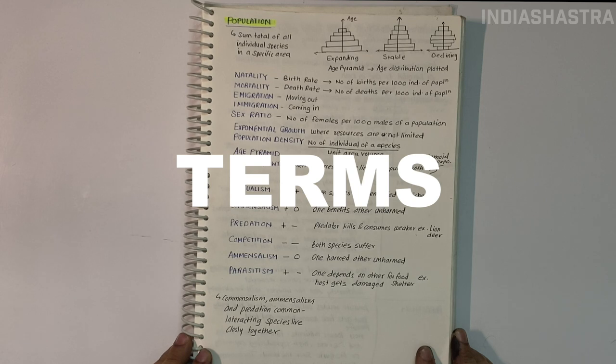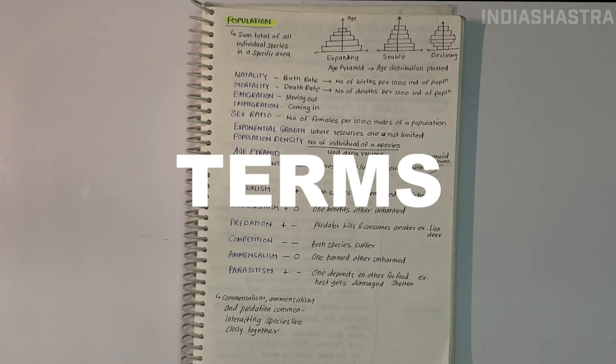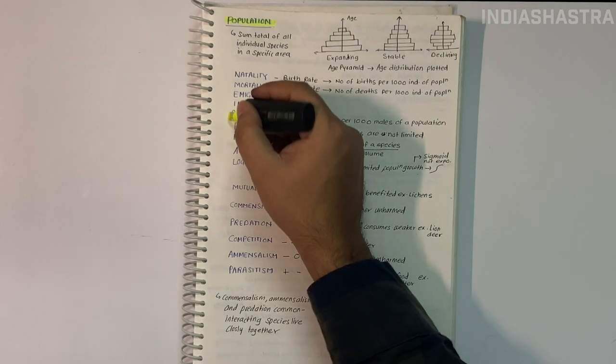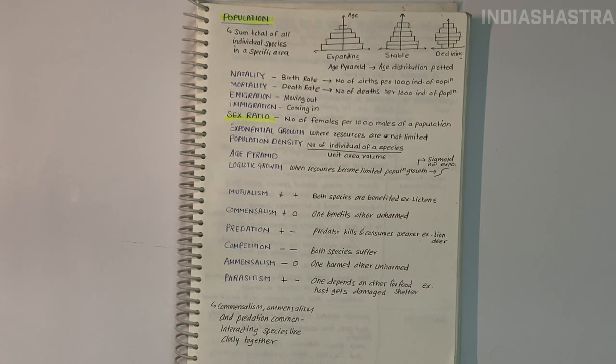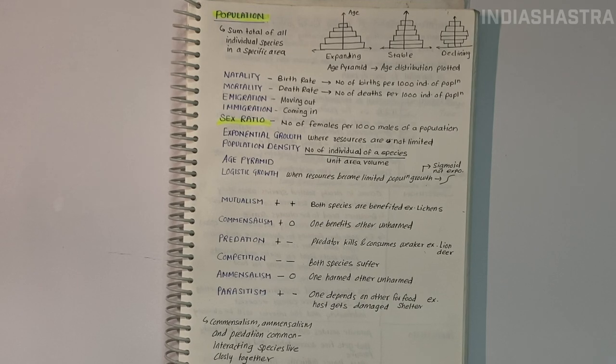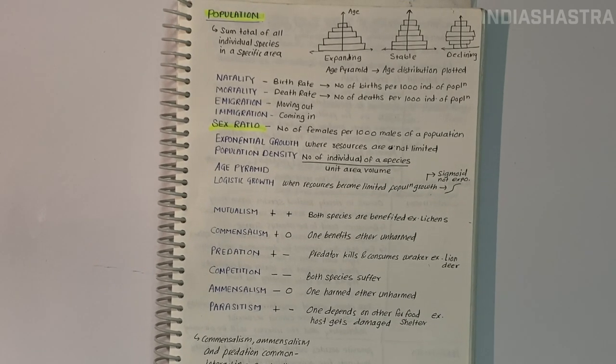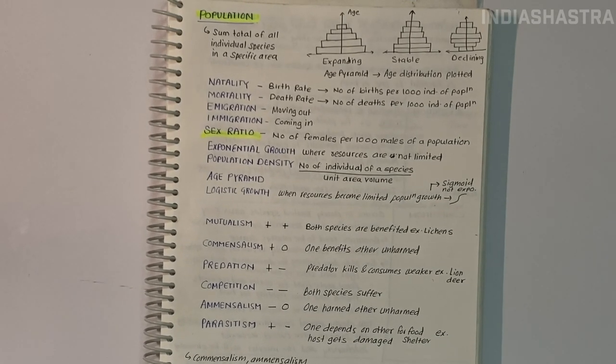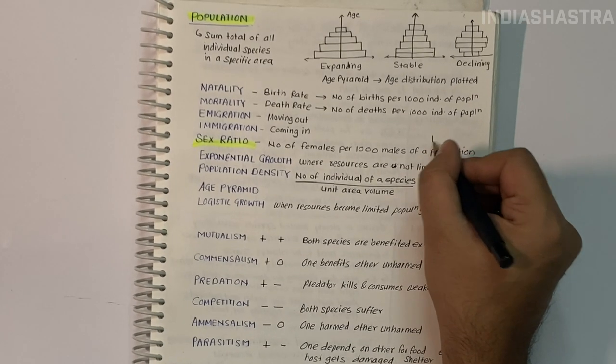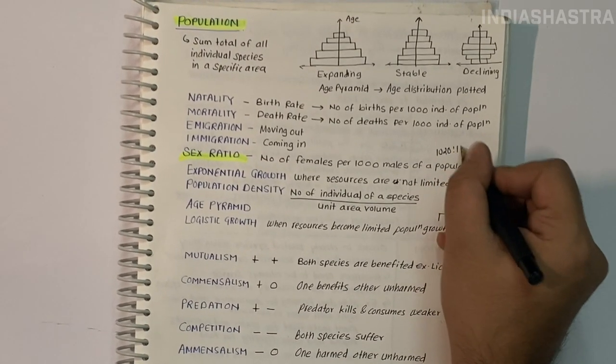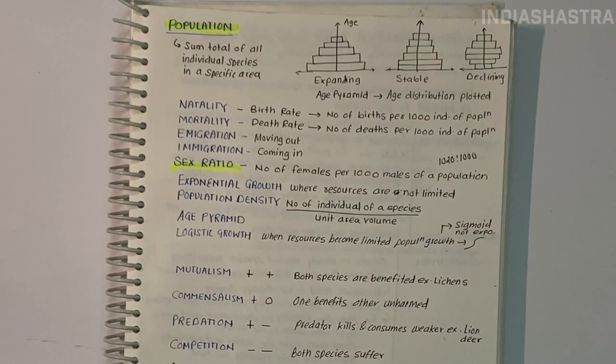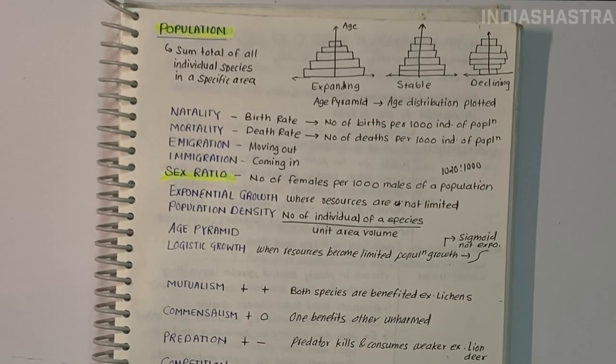Population ecology links ecology to population genetics and evolution. Let's understand terms related to populations. Sex ratio is the ratio of males to females. According to recent economic survey, India has more females compared to males - 1,020 females per 1,000 males.